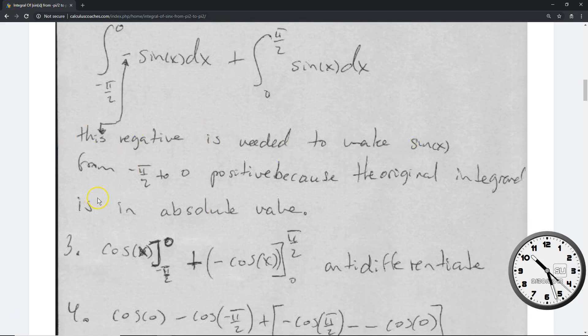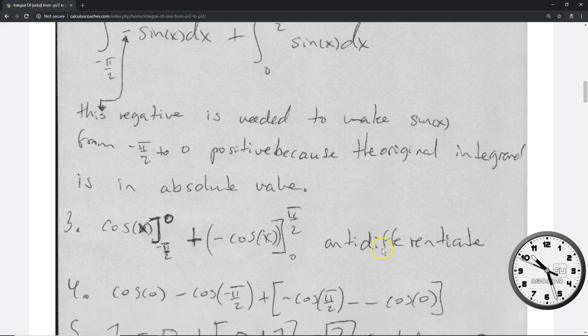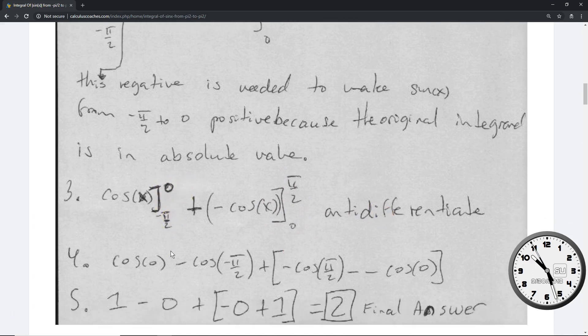So this negative sign is needed to make sure that from negative pi over 2 to 0, we take the positive version of sine of x. Once you've done that, at the next step, the anti-derivative of negative sine of x down below is cosine x, and you put in the limits, negative pi over 2 to 0. That's the anti-derivative, and then you make sure that you have the limits in that position. You plug in the limits, so cosine of 0 minus cosine of negative pi over 2.